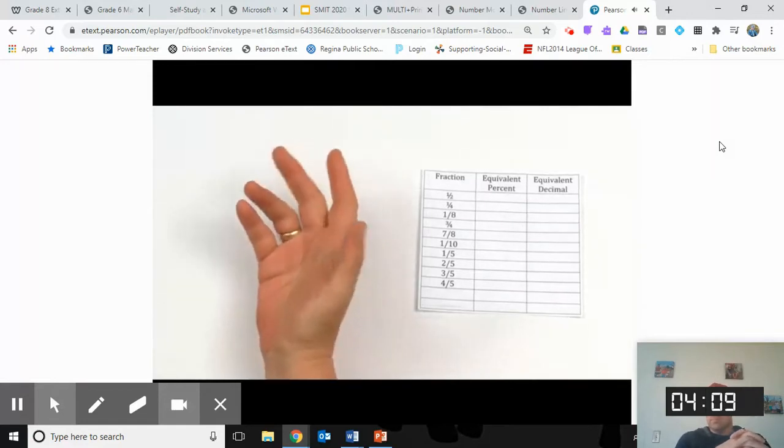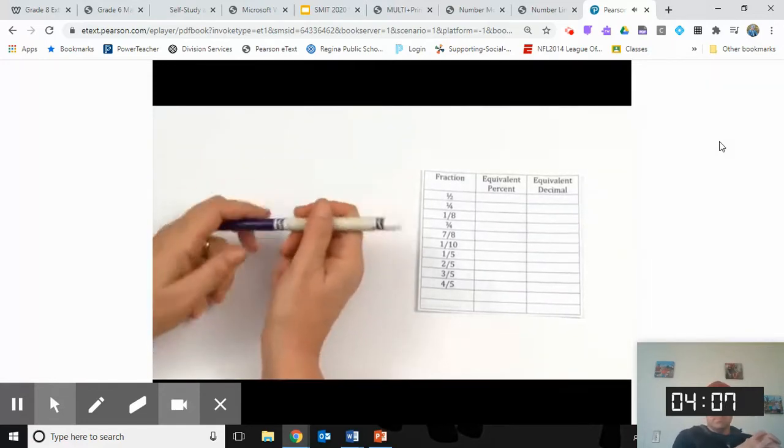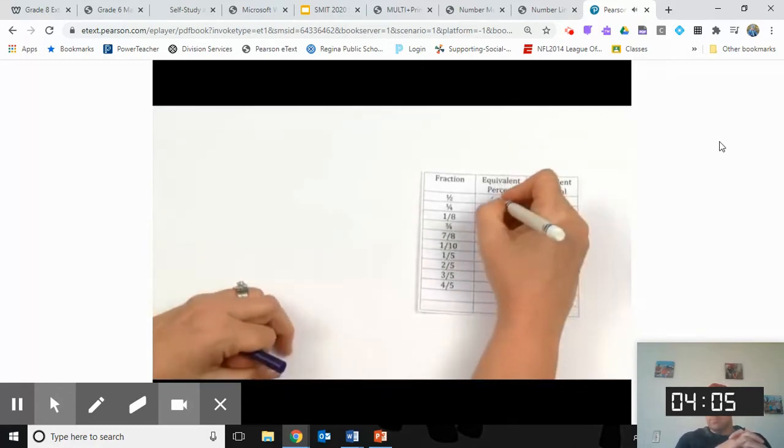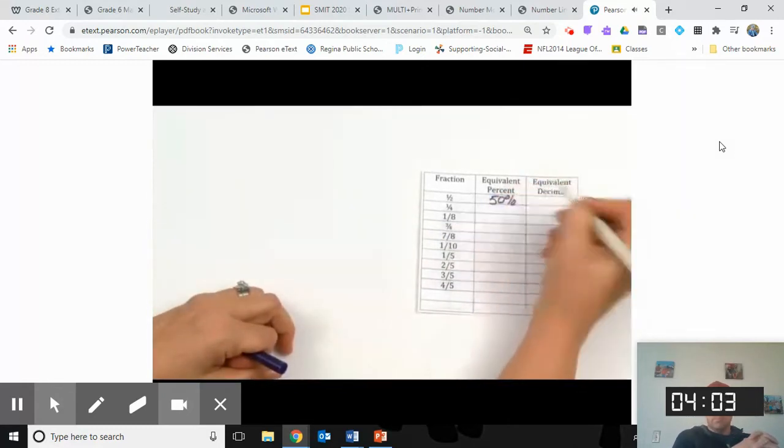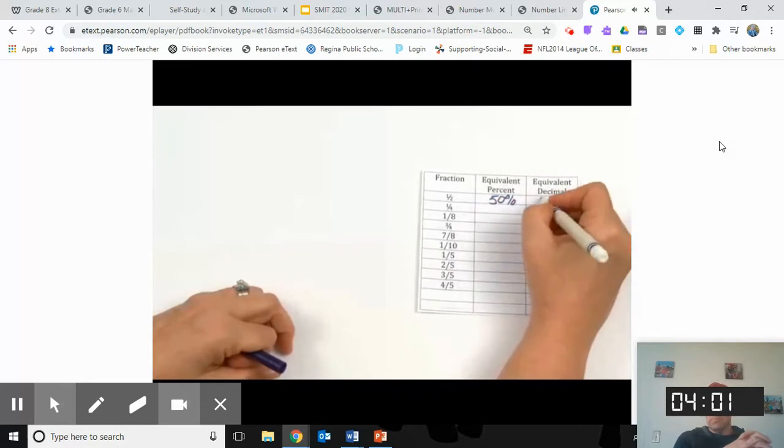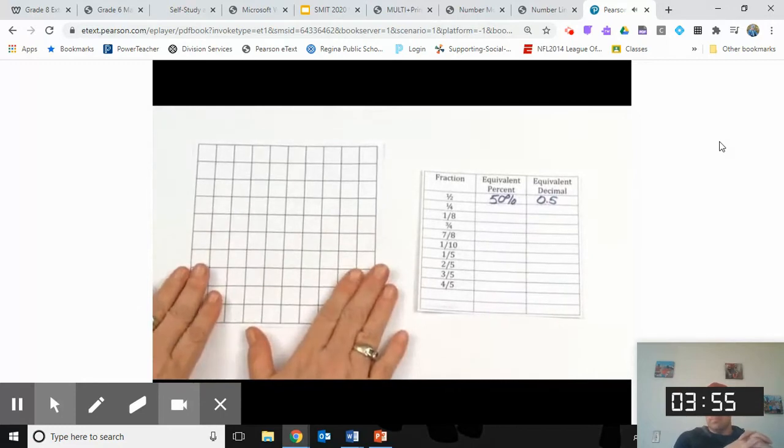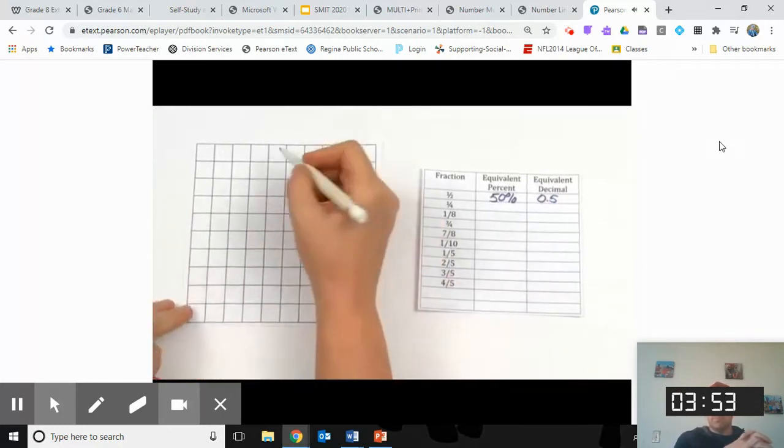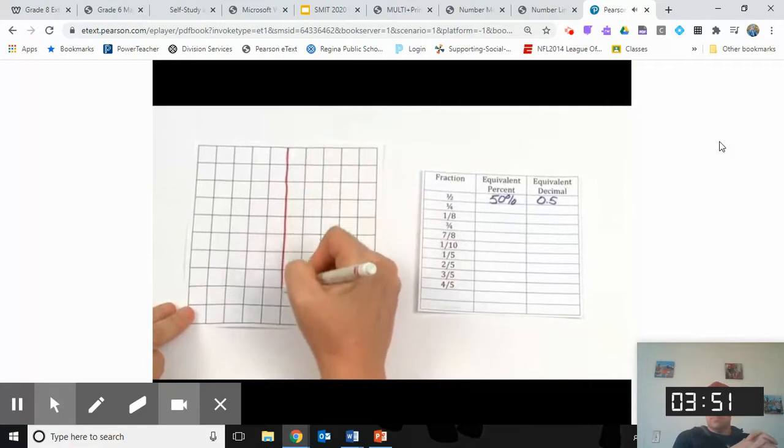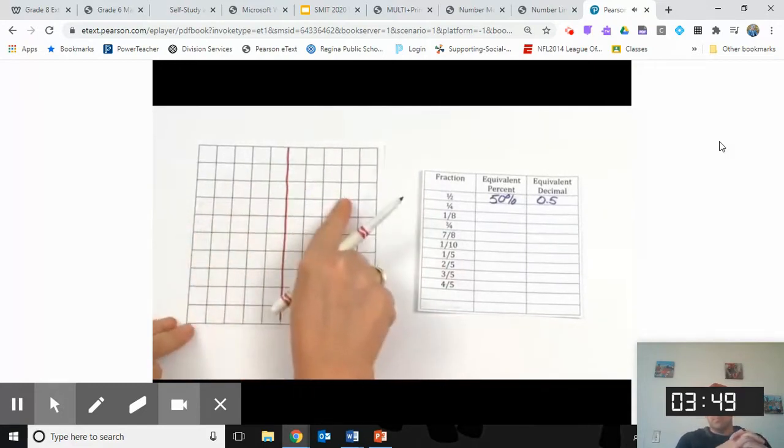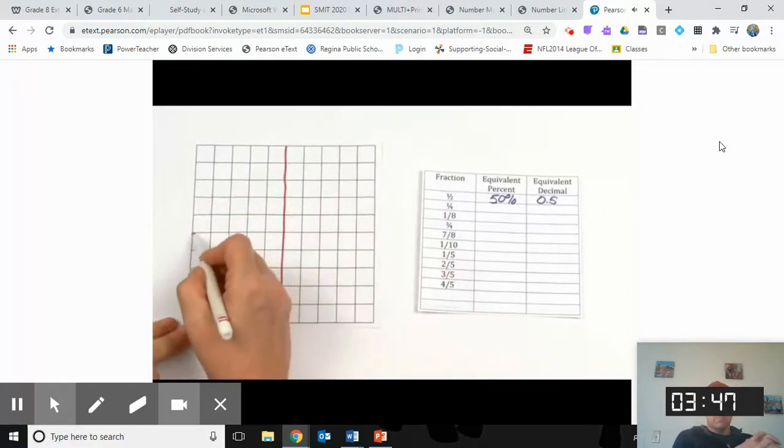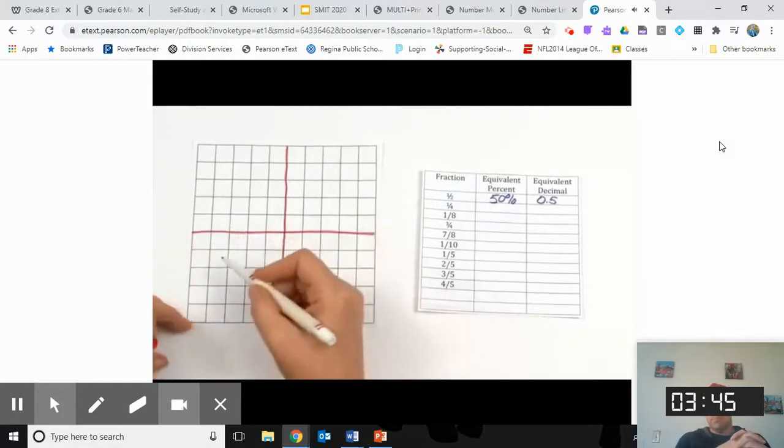One of the ones that we're pretty much all familiar with is half. Half in equivalent in decimal is 0 and 5 tenths. Let's take a look at a quarter. And I'm going to use a hundred grid to help us with this. If we take the halfway mark, there's half. So half's on this side and half's on this side.